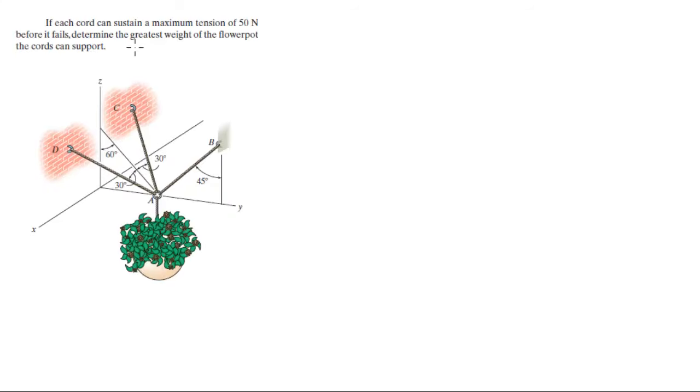Alright guys, now if each cord can sustain a maximum tension of 50 N before it fails, find the greatest weight that the flower pot can be in order for these cords to support it. Now they're telling you that these three cords, each one can sustain a maximum of 50 N. So how heavy can this whole pot be?